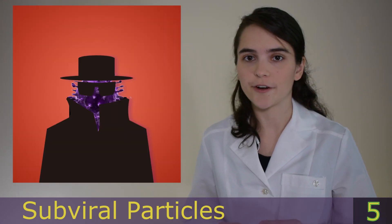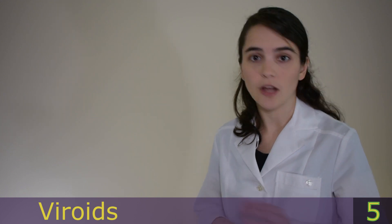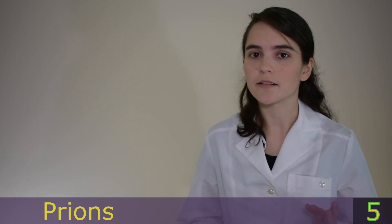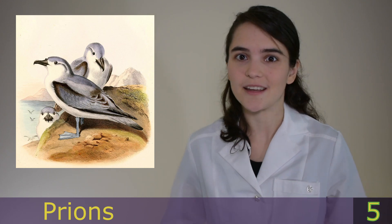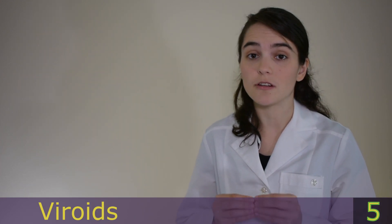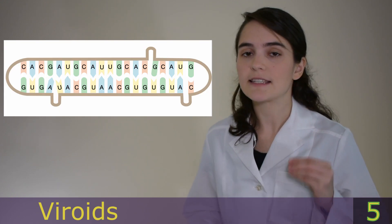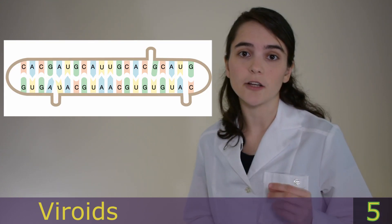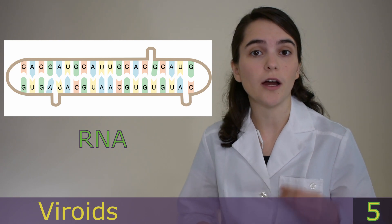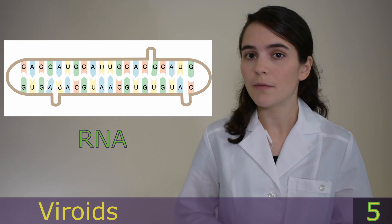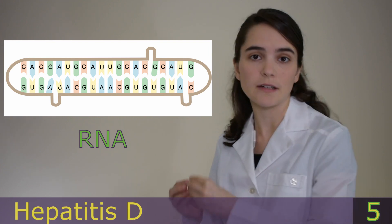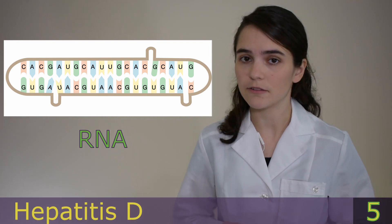There are two types of subviral particles: viroids — not to be confused with virions — and prions — not to be confused with this Australian bird. Viroids are the smallest infectious pathogen known and are made up of a single strand of circular RNA. Up until recently, viroids were thought to only infect plants, but we now know that they are partially what causes hepatitis D, which causes liver problems.